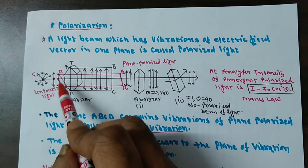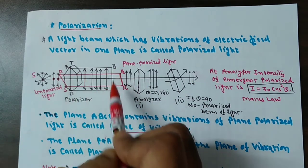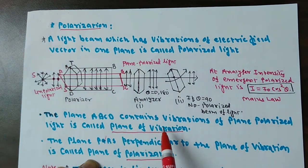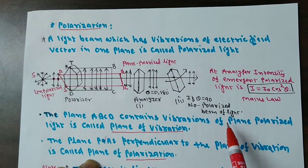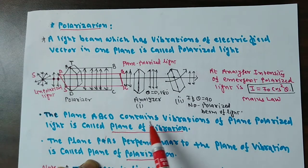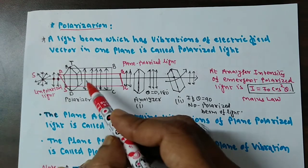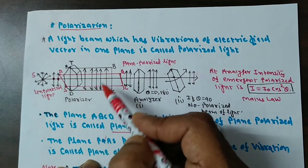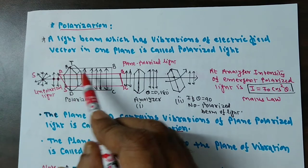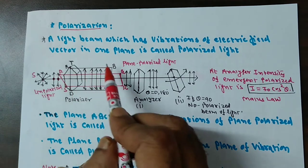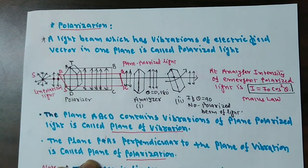Now, you see here ABCD. ABCD is called the plane of vibration. Why is it so? The plane ABCD contains the vibration of plane polarized light, so it is called the plane of vibration. You can see here, these are the electric field vectors. The electric field vectors are vibrating in plane ABCD. So this type of plane is called the plane of vibration.